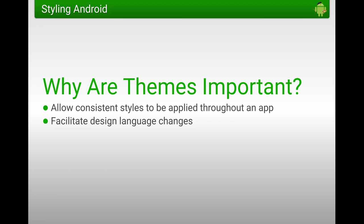They can facilitate design language changes. Designers like to change how apps look and feel, quite often based on user feedback, quite often just because they like changing things. And if we get this right through our theming, we can actually apply those design language changes quite easily. They can make white labeling easy — where you have to produce a single app that serves multiple clients, each with their own branding and color scheme. You can apply custom themes for each client.